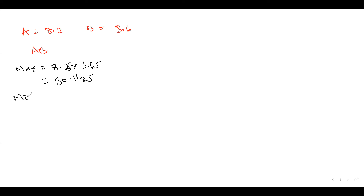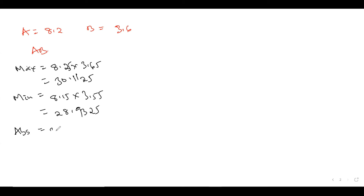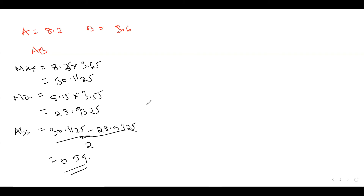The minimum value of this operation: you take the minimums and multiply them, which is 8.15 times 3.55. This gives an answer of 28.9325. Just like the previous question, to get the absolute error, take the maximum (30.1125) minus the minimum (28.9325), then divide by 2. If you do this operation, you get an answer of approximately 0.59. So this is the absolute error in the multiplication operation.